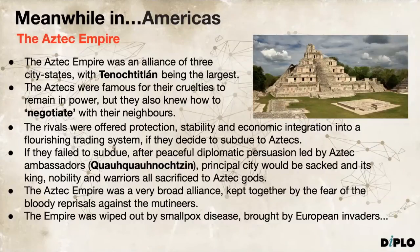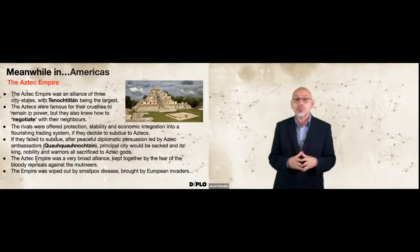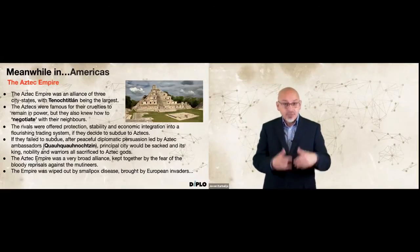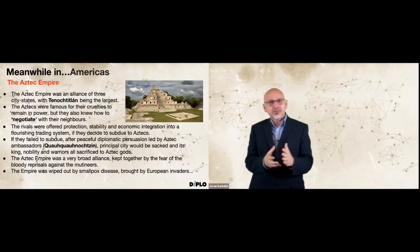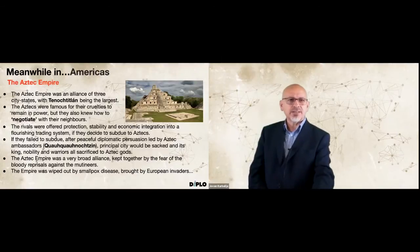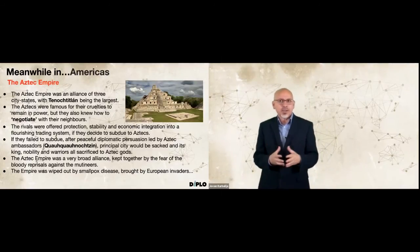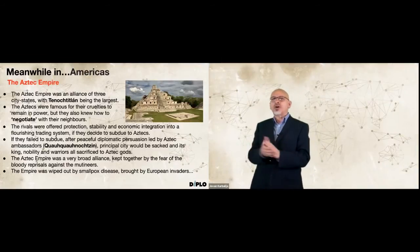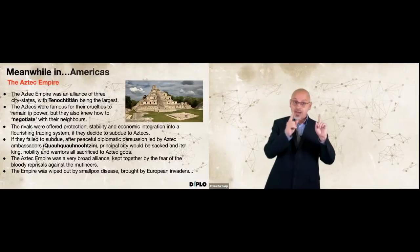The Aztecs were famous for the cruelties used to remain in power, but they also knew how to negotiate with neighboring cities. Instead of bloody wars resulting in captives sacrificed to the gods to keep the sun rolling across the skies, rebels were offered protection, stability and economic integration into a flourishing trading system. If enemies decided to subdue, the city-state would keep its ruling dynasty and order. In return, they had to pay annual tribute, send soldiers to fight alongside the Aztecs, and acknowledge the supremacy of Aztec gods.